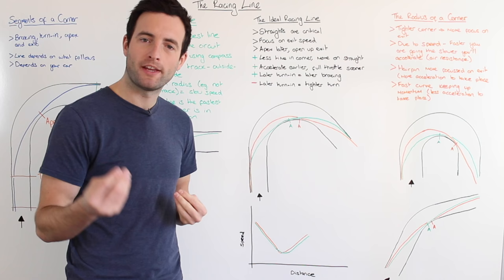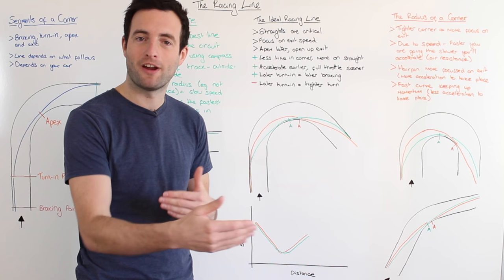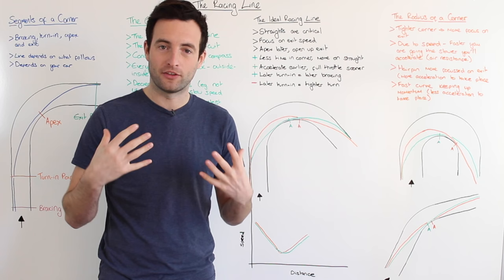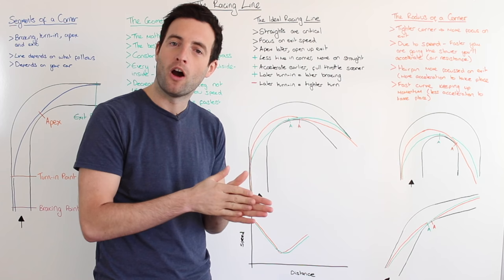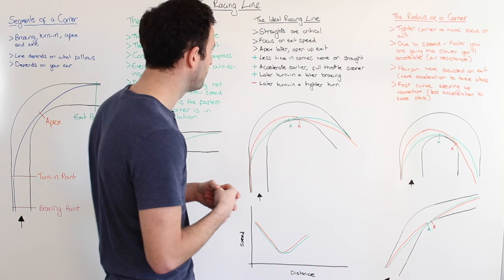However when we're racing or driving on a circuit the geometric line often isn't the quickest line through a corner, because after the corner the straights or the following corner are very important too. For example if we're coming through this tight right-hander here, the section after the corner is often more important than the corner itself — because if you carry one mile an hour more on the corner exit, you continue to carry that speed all the way down the next straight, which gives a big reduction in lap time.